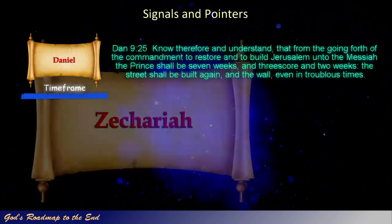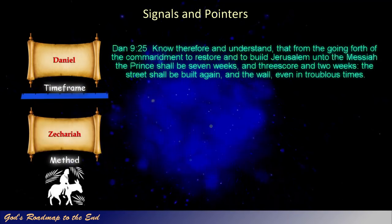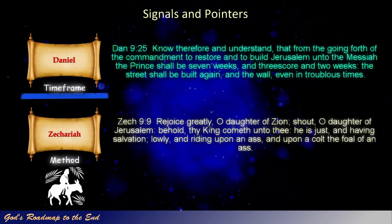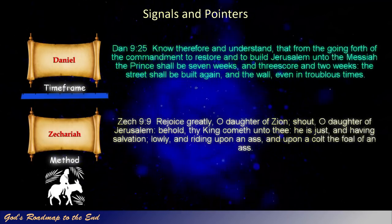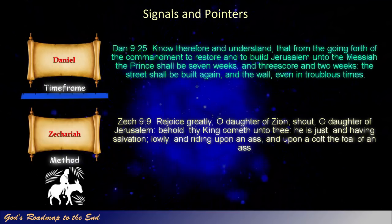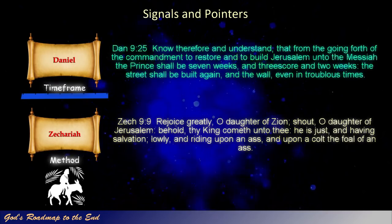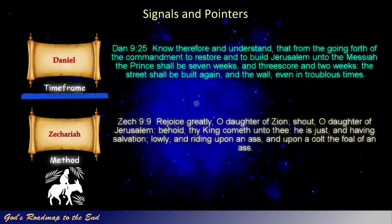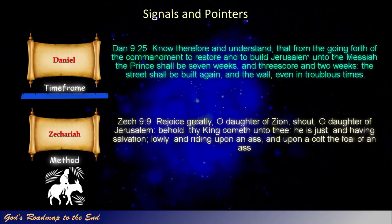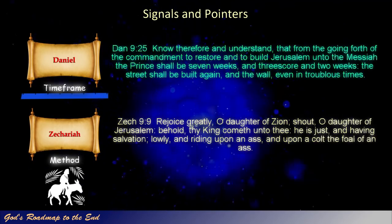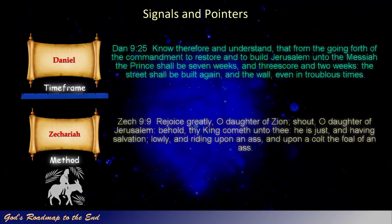In Zechariah 9, we find a description of how Israel's Messiah would present himself to his chosen nation. Zechariah 9 verse 9: 'Rejoice greatly, O daughter of Zion! Shout, O daughter of Jerusalem! Behold, thy king cometh unto thee. He is just, and having salvation, lowly, and riding upon an ass, and upon a colt, the foal of an ass.'